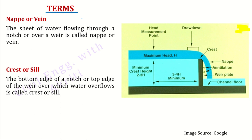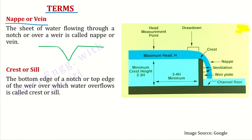Kuch terms jo hume notch aur weir ke case mein pata honi chahiye. Sabse pehle hai nappe. Jab aap notch ya weir ki baat karte hain, toh pani flow kar raha hai — ek side se doosri side ko ja raha hai, chahe woh notch ho, chahe woh weir ho. Toh yeh jo sheet of water ban rahi hai, jis se pani ek side se doosri side ja raha hai, isko hum kya bolte hain? Nappe. The sheet of water flowing through a notch — notch ke andar se pani nikalta/bahta hai — aur jo weir hoti hai, uske oopar se pani bahta hai — so that is known as a nappe.